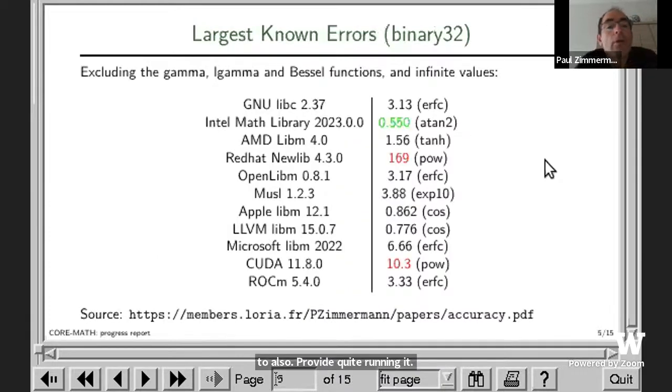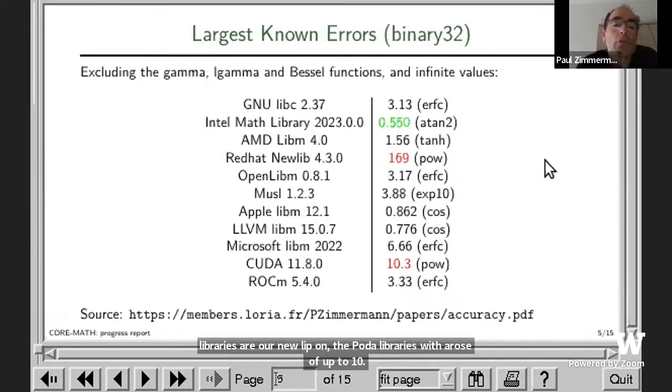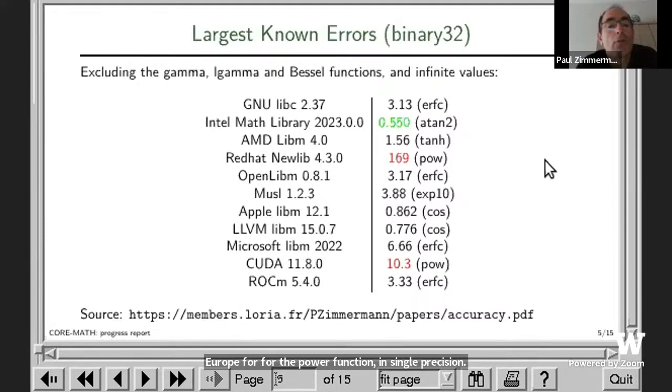If we look at the largest known errors you get when you compute with these libraries, this is an excerpt of a table that Martin already mentioned before. This is the largest known error for single precision. The best libraries are Intel Math Library with the largest known error of a little more than half a ULP for rounding to nearest, while the worst libraries are Newlib and the CUDA libraries with errors of up to 10 ULPs for CUDA for the power function in single precision, and almost 170 ULPs for the power function for Newlib.